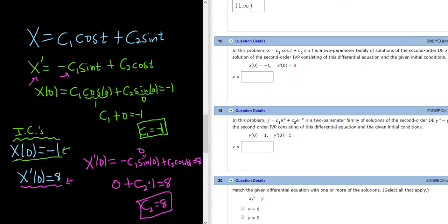So now that we have c1 and c2, all we do is plug them back into our x. So the final answer is x equals. So let's see, c1 was negative 1, so this is negative cosine t plus, and then c2 is 8, so this is 8 sine t. And that would be the solution to the initial value problem.